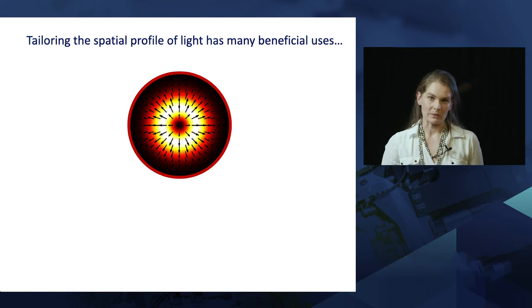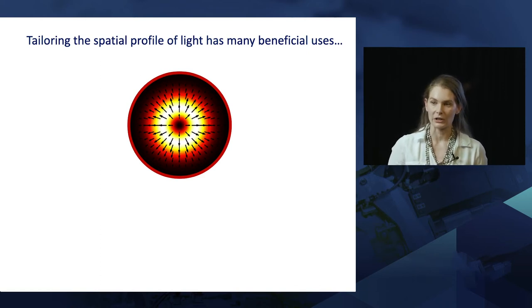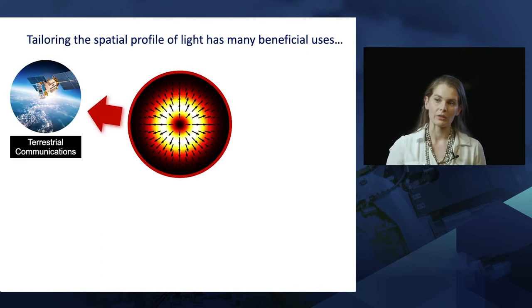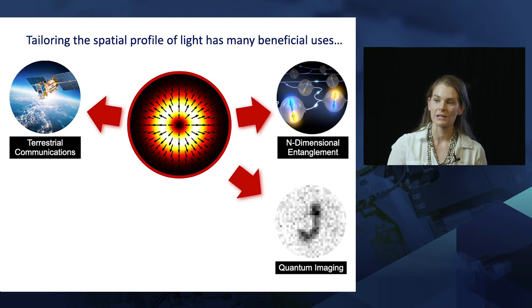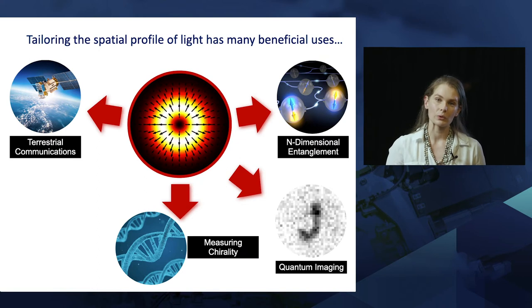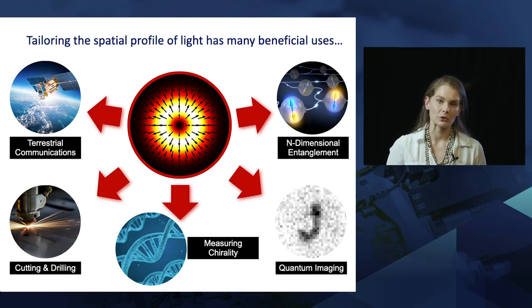So with these structured light beams, there are many advantages to being able to use them. This just highlights some of the interests that we have at WITS together with the CSIR. So we're interested both in doing high bandwidth communication, as well as using these structured beams to increase the dimensionality of quantum communication systems, as well as using it in quantum imaging. And then also using what we call super chiral light to be able to measure and probe chiral molecules in metrology, as well as using it in cutting and drilling in laser additive manufacturing.